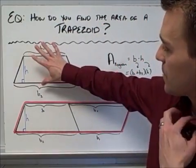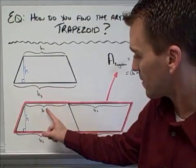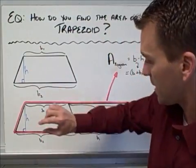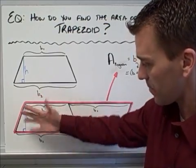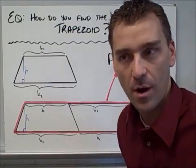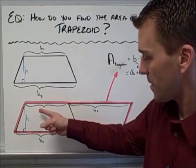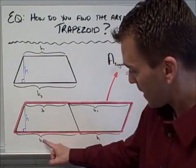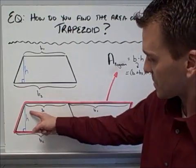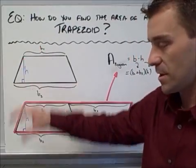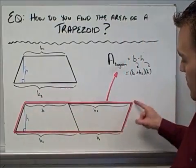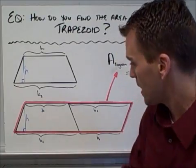I've taken this trapezoid and cloned it right here, so B1, B2, and the height are still the same. Then I've cloned it again, flipped it, and attached it to the right side of the original trapezoid. Since I cloned and flipped it, base 1 is also down here and base 2 is up here on the right side. The height is still the same. This gives us something useful — two exact-size trapezoids together forming a parallelogram.